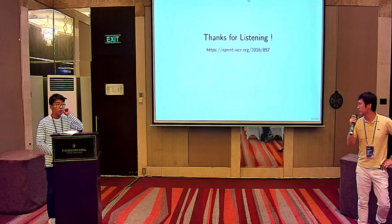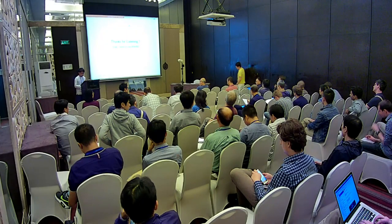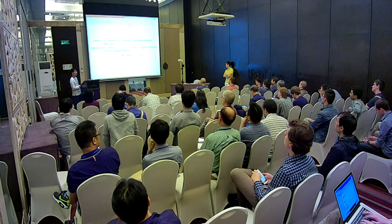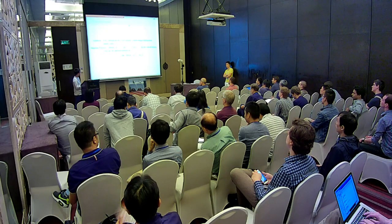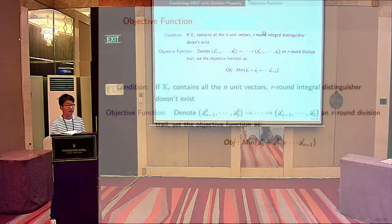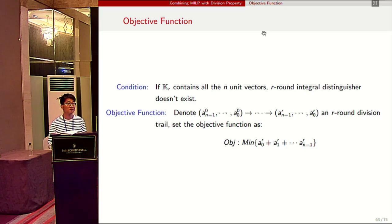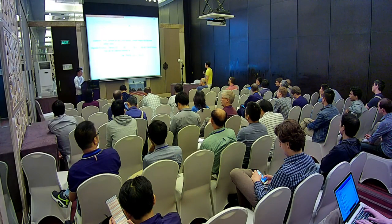Those are some references. Thank you. During the Q&A, a question was raised asking the speaker to go to the slide showing the objective function. The speaker clarified that they are minimizing the sum of the coordinates of the last vector of the division trail.